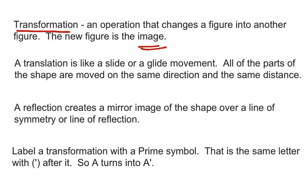And we've got two different kinds of transformations that we're going to talk about. One is a translation. Another word for that is glide or slide. The movement is a glide or a slide, so that all parts of the shape are moved in the same direction and the same distance. So we'll see an example of that in a minute.